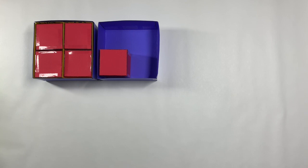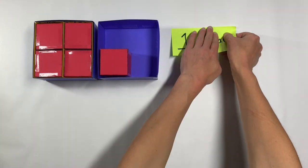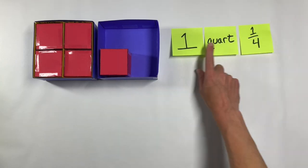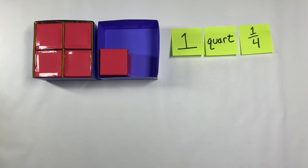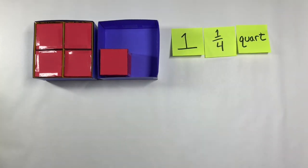For example, one student might say a quart and a fourth. And when they do, it's not clear what the unit is on that fraction. So do they mean one quart and a fourth of another quart, or do they mean one quart and a fourth of something else? We want to be precise in our language and we want to make sure that we are being thorough in our descriptions.